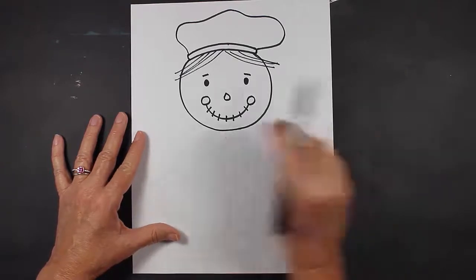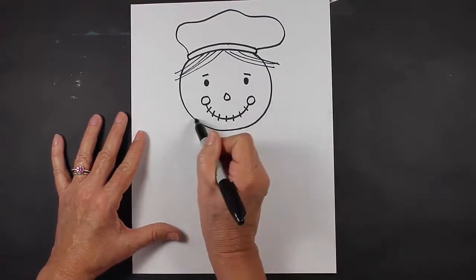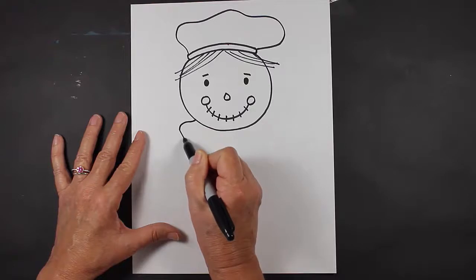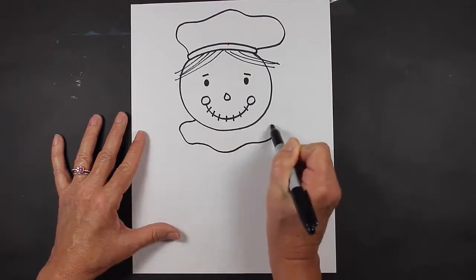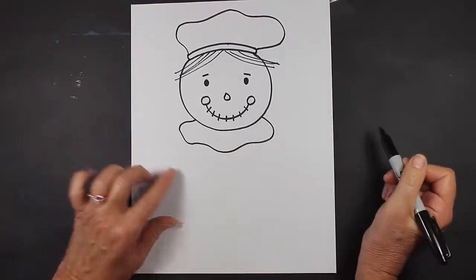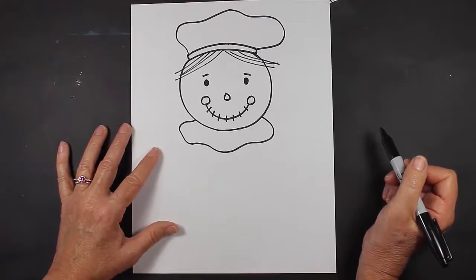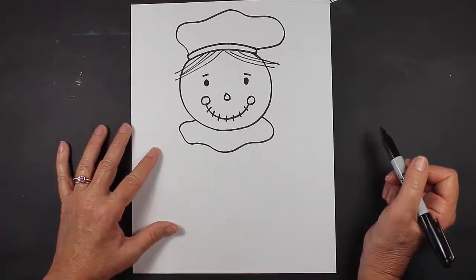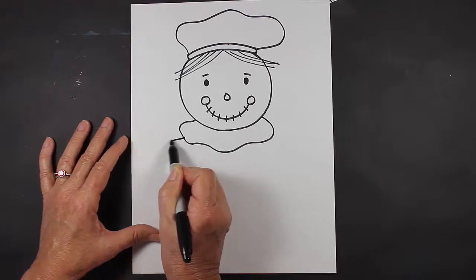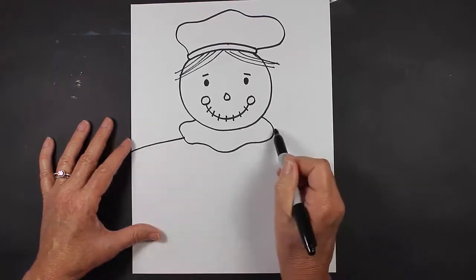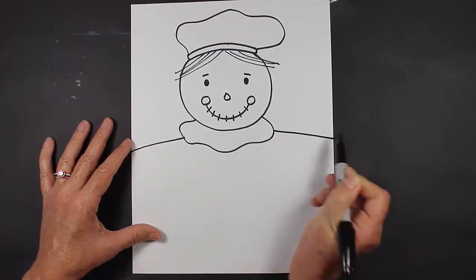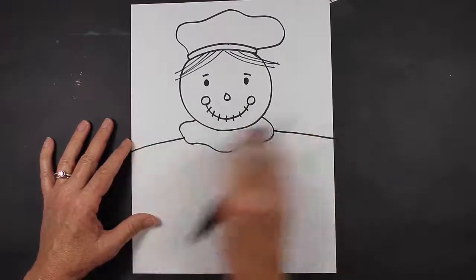Now down here below, we're going to make our scarecrow a collar, just a line that looks similar to this. Yours is not going to look exactly like mine and that's okay. Then we're going to make a line coming out this way and a line coming out this way. These are going to be the shoulders and arms of our scarecrow.